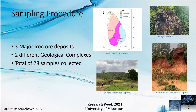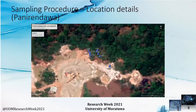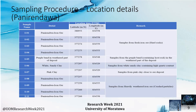In the sampling procedure, three major deposits were chosen. These three deposits fall into two different geological complexes: the Highland and Vijayan complexes. A total of 28 samples were collected from these three locations. At the Paniranga deposit, 11 samples were collected: from the fresh iron ore itself, from the host rock, and from the weathered and transported material.